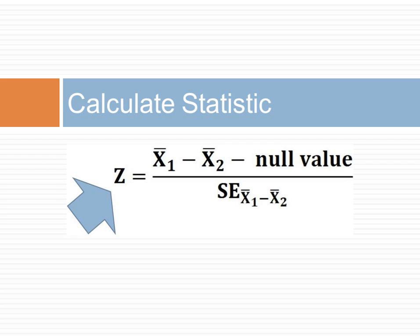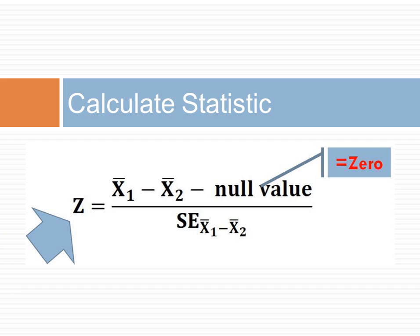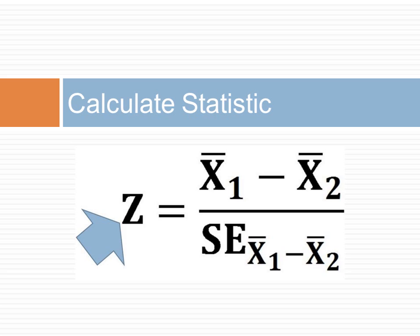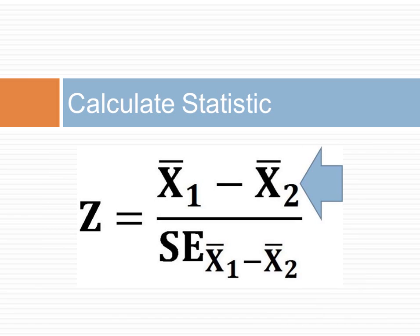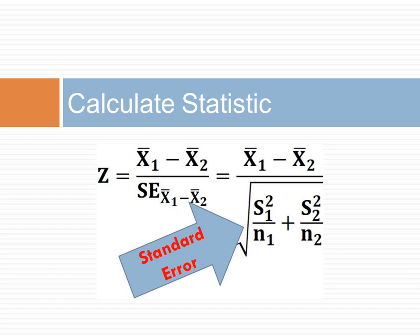The third step in our framework for hypothesis testing is to calculate the statistic. The statistic z is calculated from the point estimate minus the null value divided by the standard error. Specifically, z is calculated from the difference of the two sample means. When we test for no difference between the two sample means, the null value is zero. Then the statistic z is calculated from the difference of the averages of the two samples divided by the standard error of the difference of the two means.